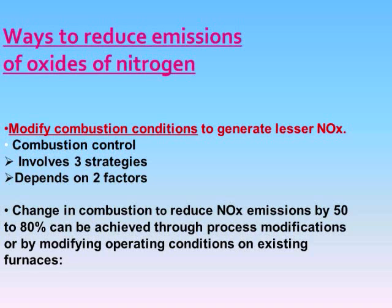Change in combustion to reduce NOx emissions by 50-80% can be achieved through process modifications or by modifying operating conditions on existing furnaces. Process modifications include using specially designed Low NOx burners, reburning, combustion staging, gas recirculation, reduced air preheat and firing rates, water or steam injection, as well as low excess air firing.